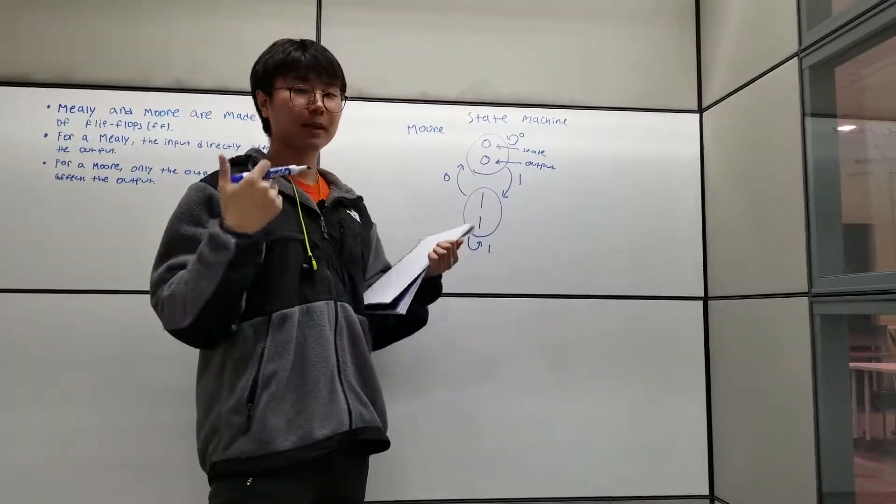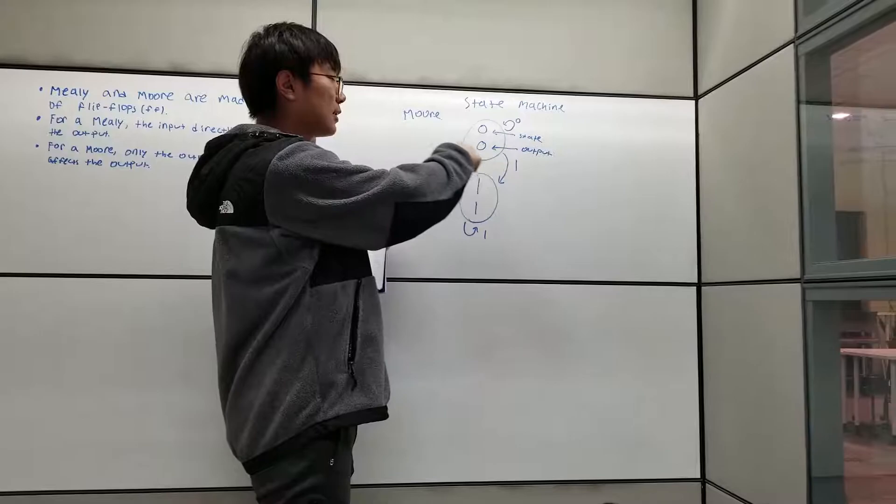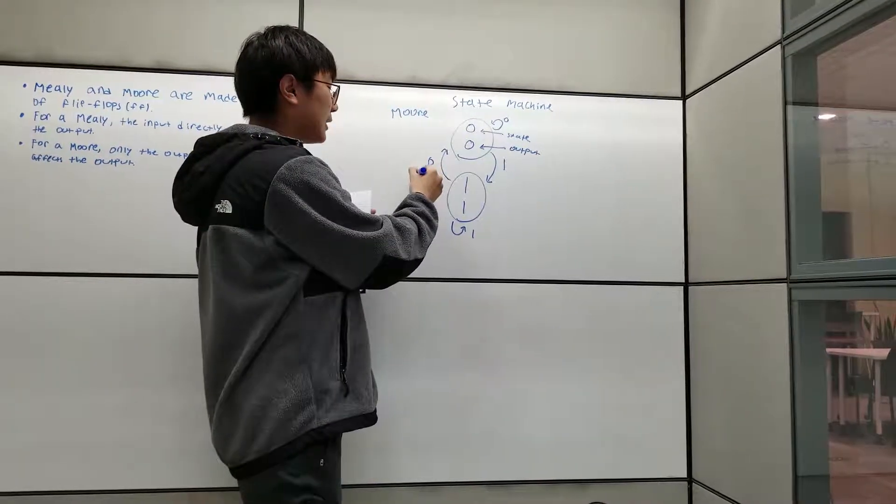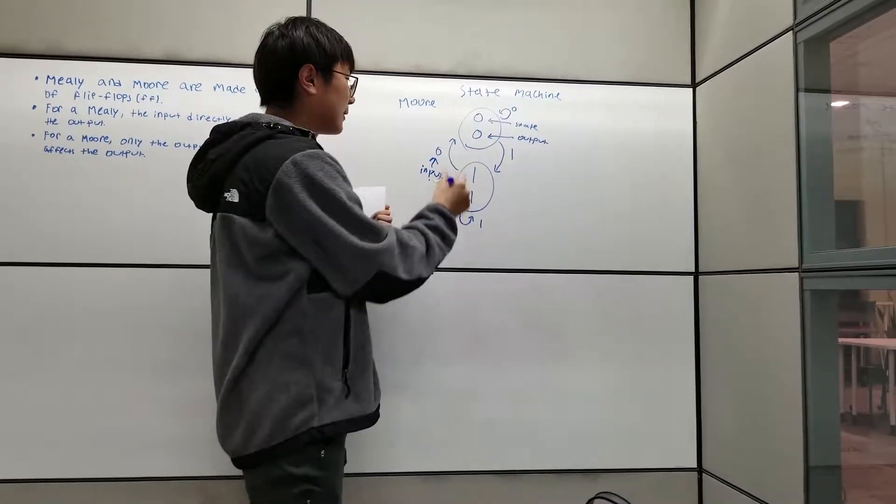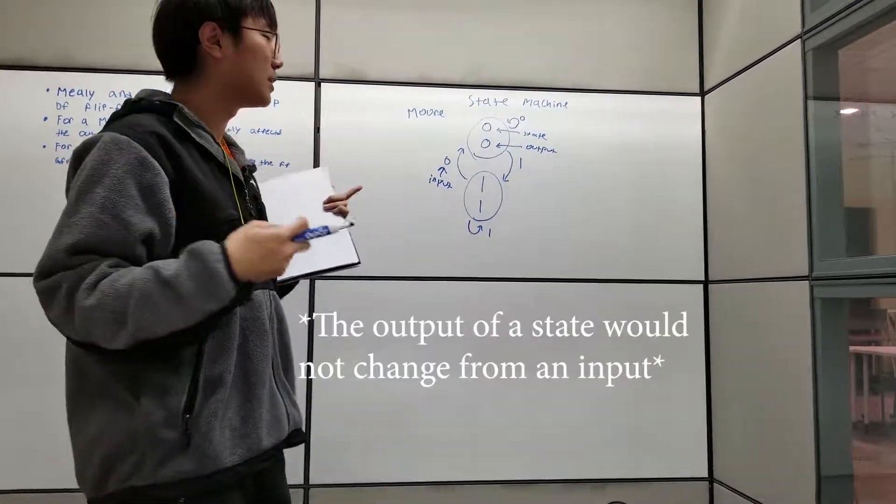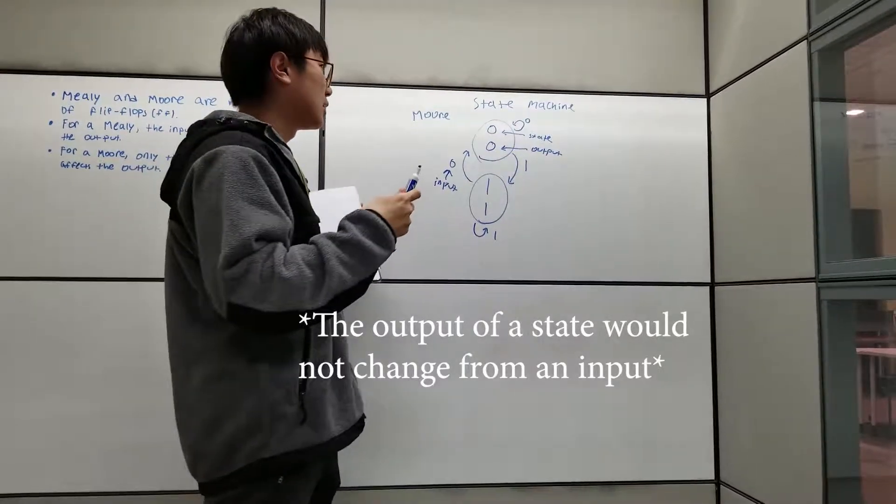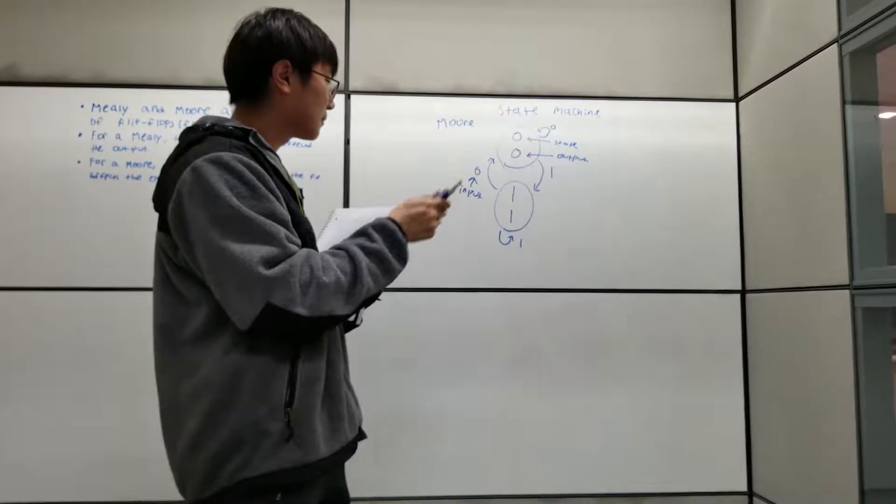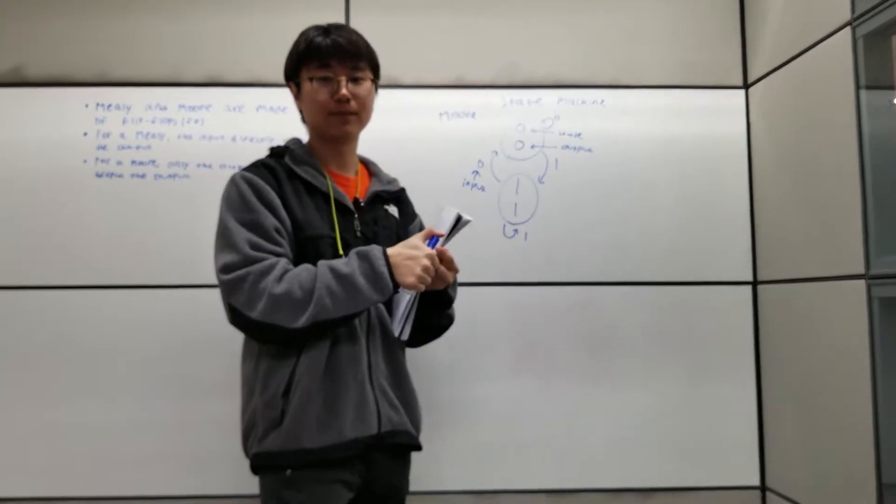Unlike Mealy, where it has two numbers going to each state, this will only have one number. That one number is the input, because the output would not change depending on what the input is. And that's the difference between Mealy and Moore.